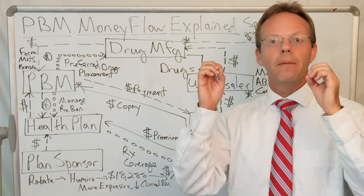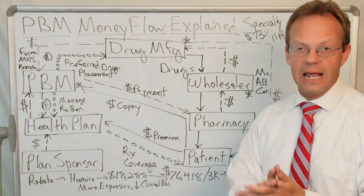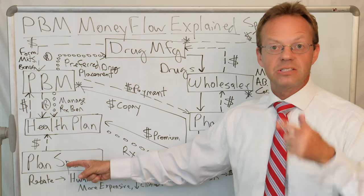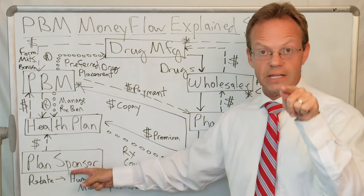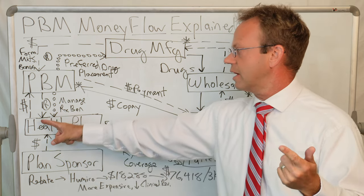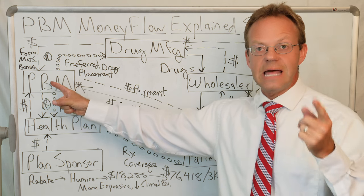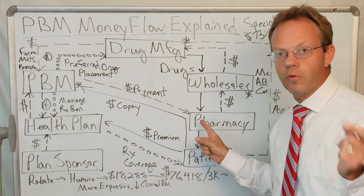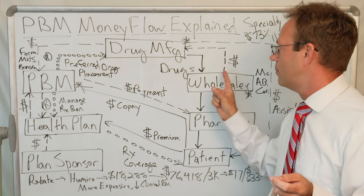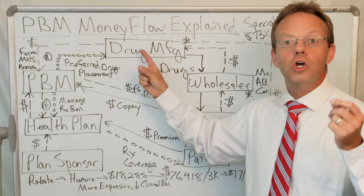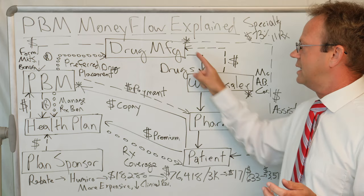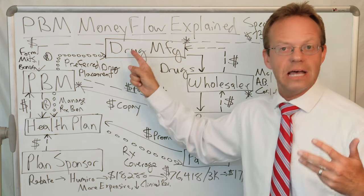Next, let's follow the money first. The money is the dotted arrows. Where does the money start? With the plan sponsor. Golden rule: he who has the money makes the rules. So just remember that — as a plan sponsor, you actually make the ultimate rules. The money goes to the health plan itself, then from the health plan to the PBM. The PBM then takes that money to pay the pharmacy for the prescriptions. The money then goes to the wholesaler, who the pharmacy bought the drug from, and the money goes from the wholesaler to the drug manufacturer, who the wholesaler bought it from.